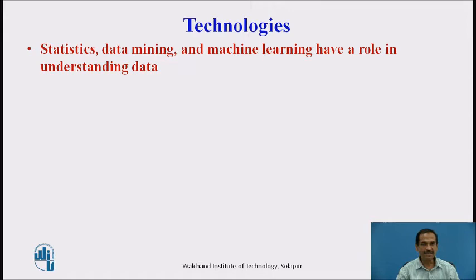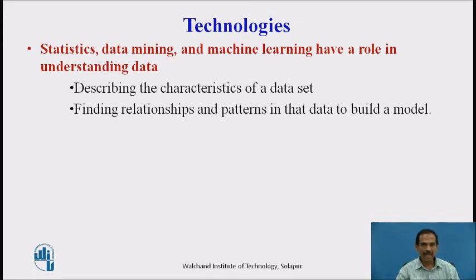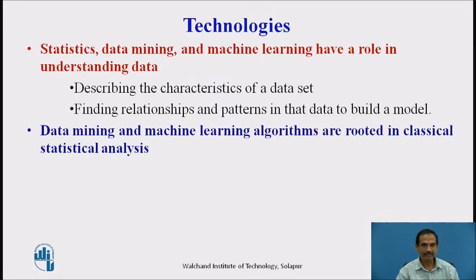These technologies have different roles in the understanding of data. They describe the characteristics of a particular data set of interest and go into resolving the finding of relationships and patterns in that data to finally build a model. Data mining and machine learning algorithms are rooted in classical statistical analysis — whenever we are analysing statistics, there is involvement of data mining and machine learning.